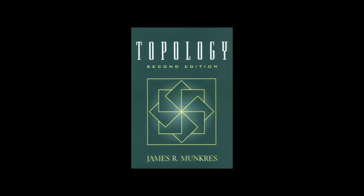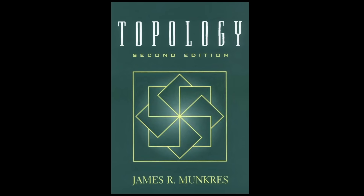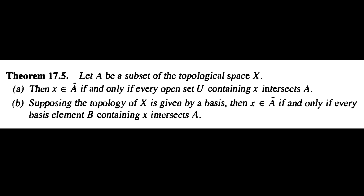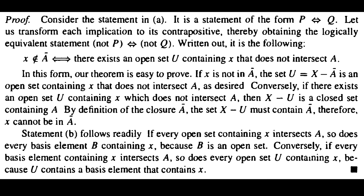Topology by James R. Munkres — this is one of the most classic and widely known books in point-set topology. Let's read Theorem 17.5 and tell me sincerely whether you understand it or not. Let A be a subset of the topological space X. Then X belongs to the closure of A if and only if every open set U containing X intersects A. Supposing the topology of X is given by a basis, then X belongs to the closure of A if and only if every basis element B containing X intersects A. If you never studied point-set topology before, most likely you had a hard time understanding what this theorem is all about.